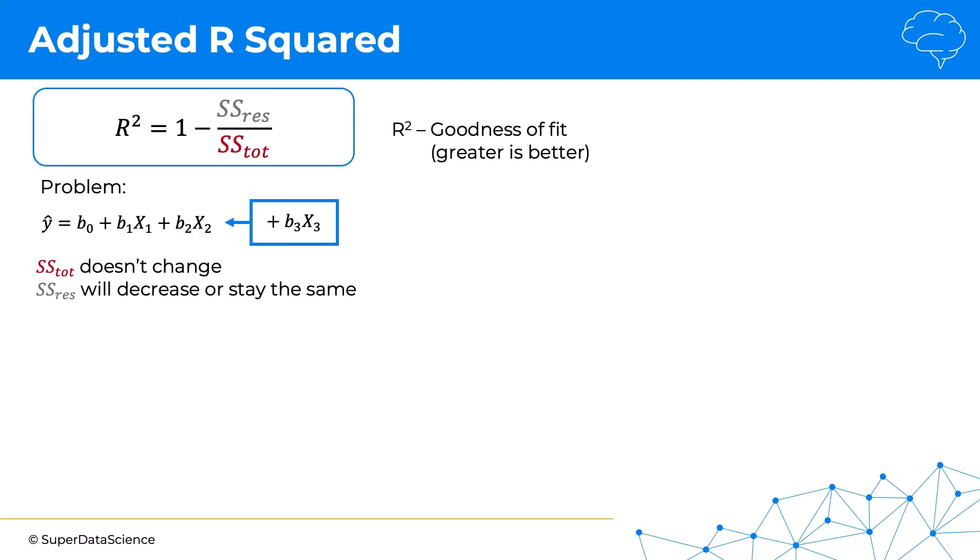And this might not be intuitive at first, so let's talk about it a little bit. The main reason for this is that we are using the ordinary least squares method to build our models, and what the ordinary least squares method does is it aims to minimize the residual sum of squares. So let's see this in action.